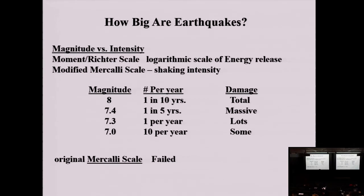This is an inverse relationship we've been talking about with disasters: the bigger they are, the less frequently they happen. Going from magnitude 7.0 to 8.0, you can see roughly how many happen globally per year and a qualitative assessment of how much damage to expect in an average city. But this is also tough because the same energy release in semi-consolidated sedimentary rock can cause massive damage, while the same energy release in structurally sound crystalline granite or gneiss produces virtually none.